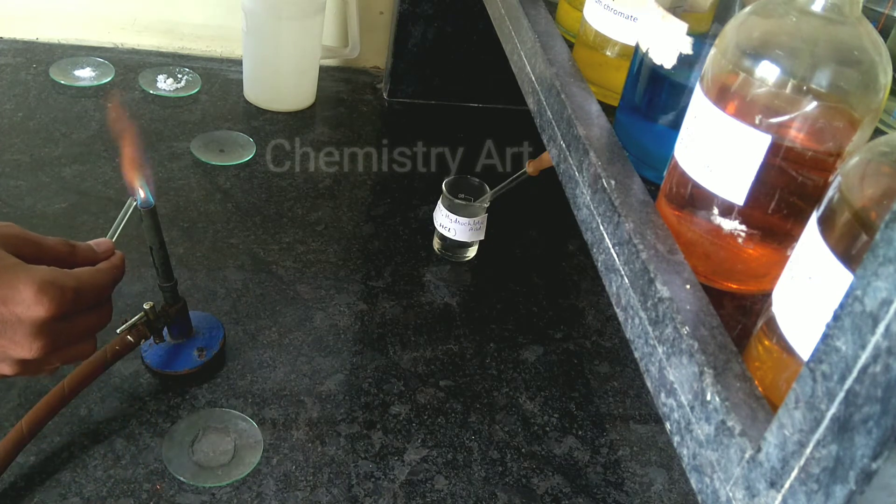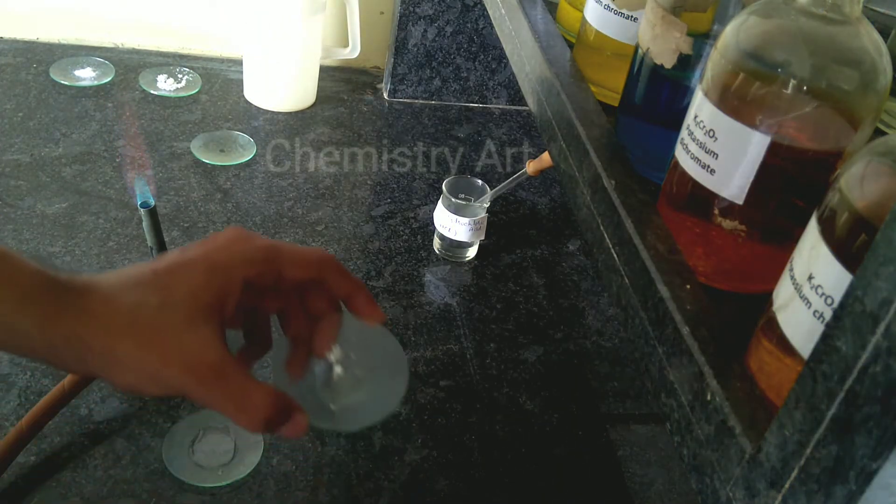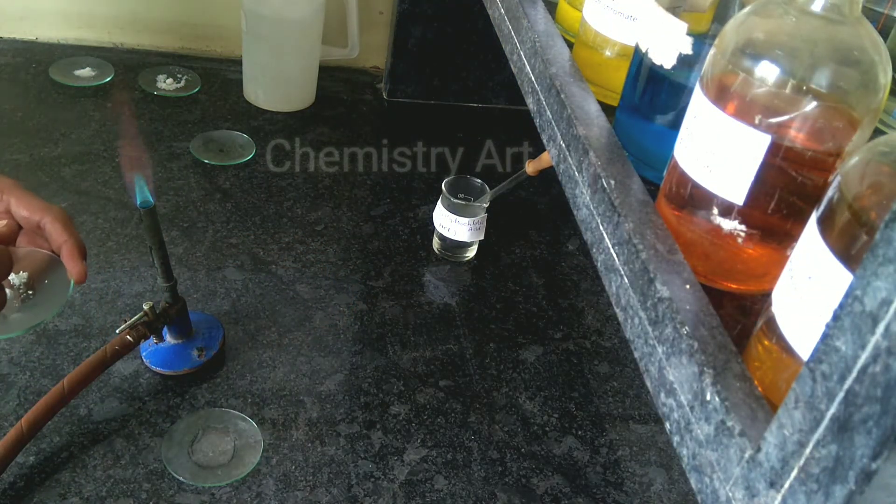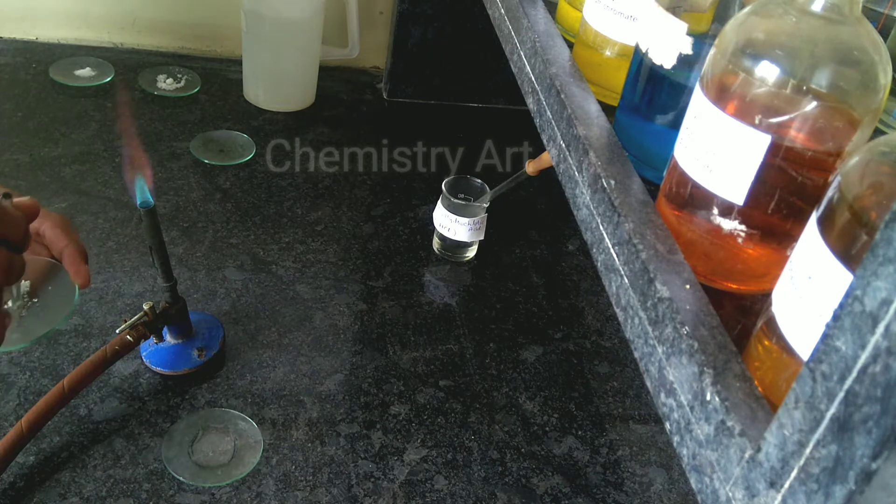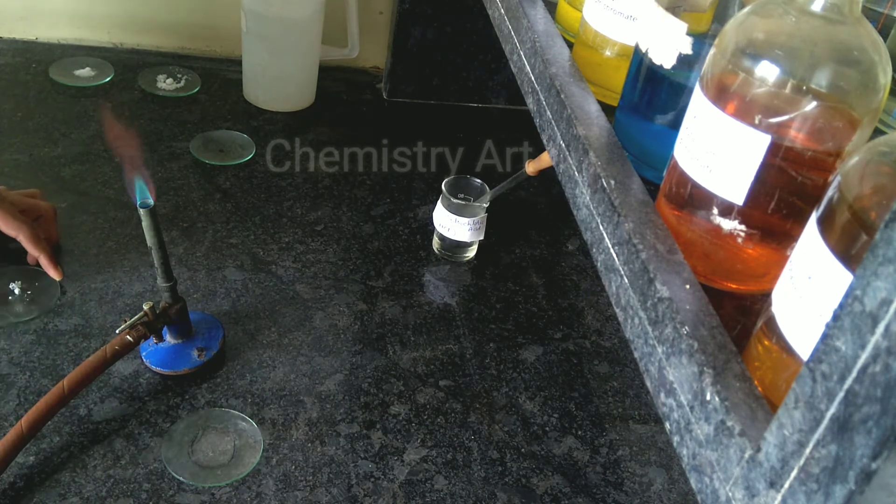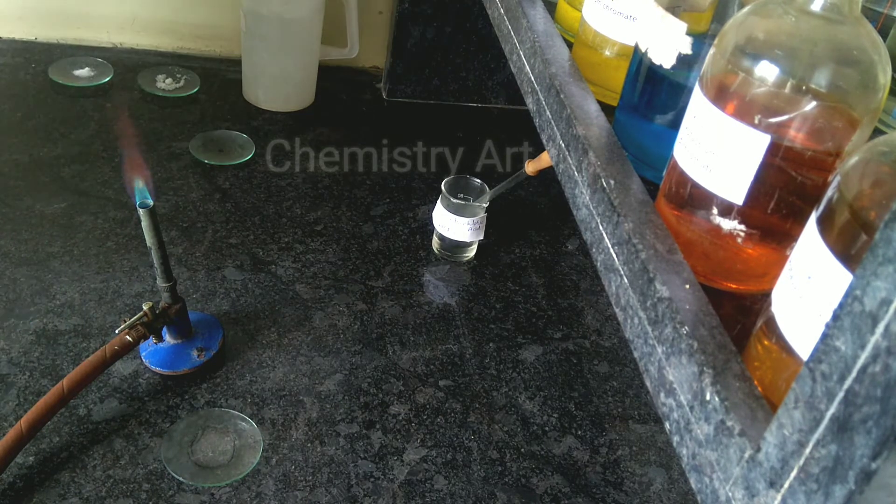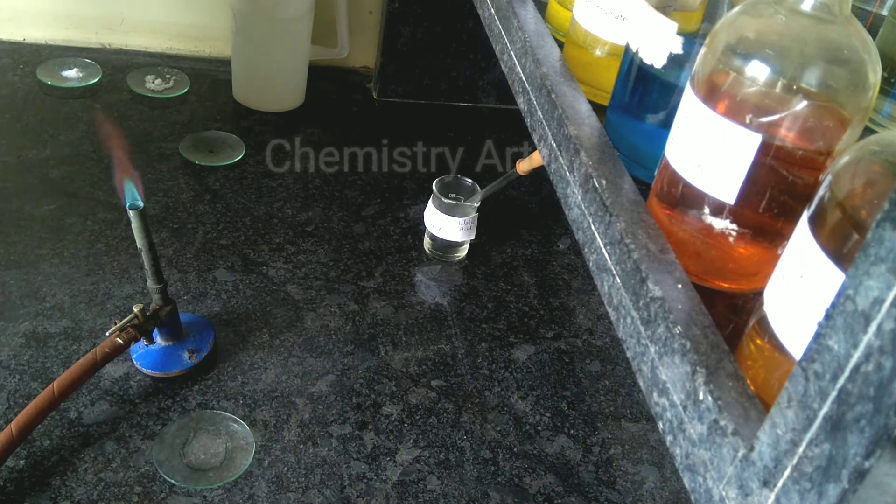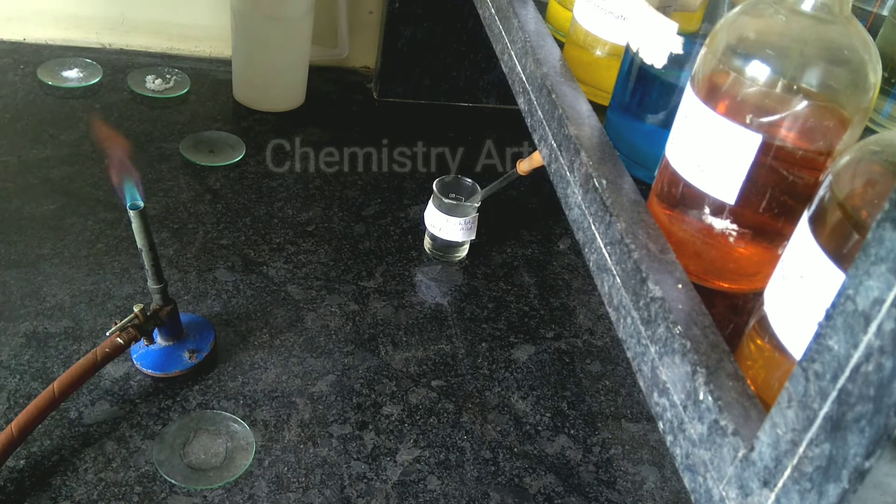As you can see, I am cleaning the platinum wire. Now I will take a very small amount of my paste of the salt on the loop of the platinum wire, and then we need to heat it. Here you can see the color, you can see the red color.